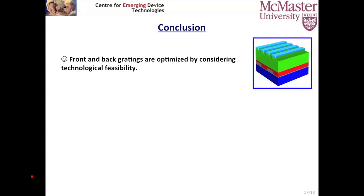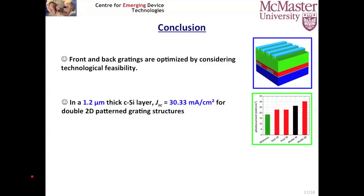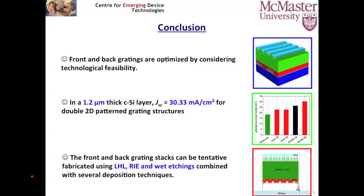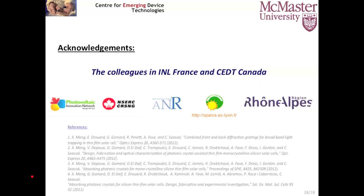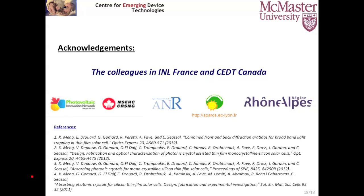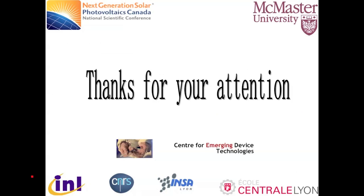In conclusion, the front and back gratings are optimized considering real fabrication feasibility on a 1.2 µm crystalline silicon layer. The short-circuit current density is up to 30 µA/cm² with the double 2D patterned grating structure. The front and back grating stacks can be alternately fabricated using laser holographic lithography, reactive ion etching, and several deposition techniques. I'd like to thank my colleagues from France and Canada and our funding agency for supporting this research. Thank you for your attention.